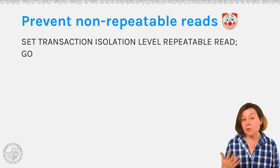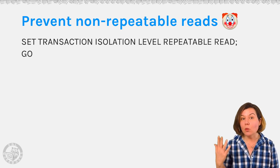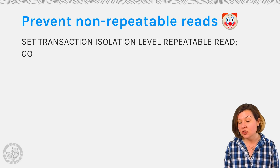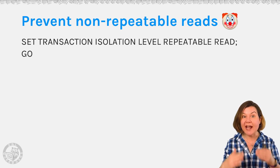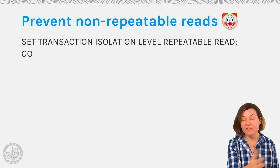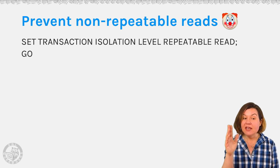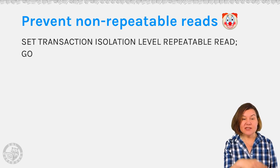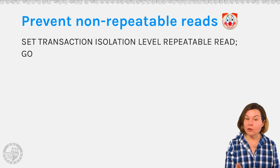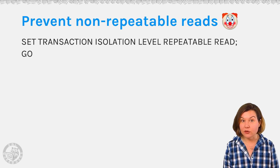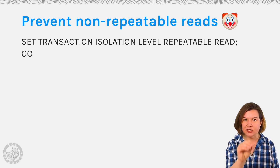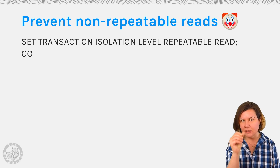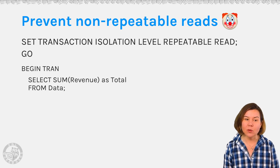The isolation levels repeatable read and serializable were introduced so that if we don't want to have these phenomena, we don't have to — we can prevent them. If we aren't worried about phantoms and only want to prevent non-repeatable reads, we can set our isolation level to repeatable read. You can also use a query hint, but setting the session isolation level means everything uses repeatable read unless you hint otherwise.